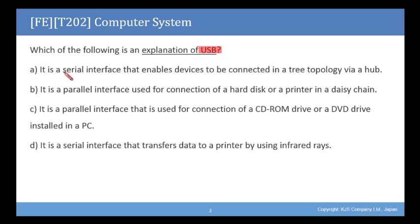Is it A, it is a serial interface that enables devices to be connected in a tree topology via a hub? Or is it B, it is a parallel interface used for connection of a hard disk or a printer in a daisy chain?